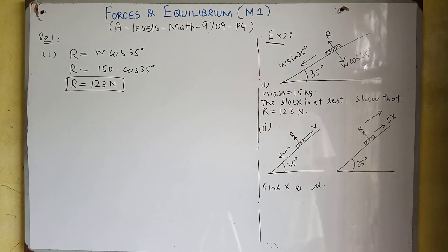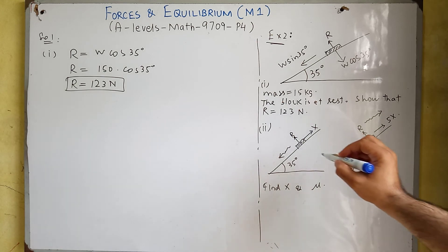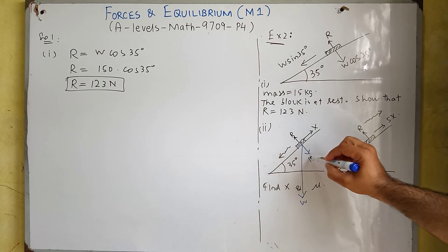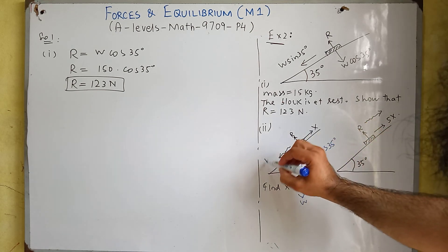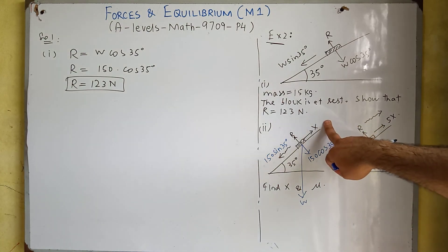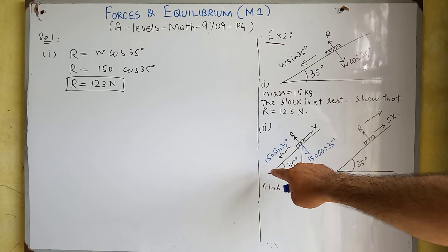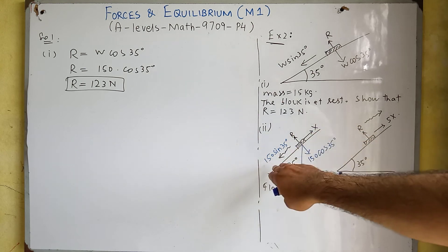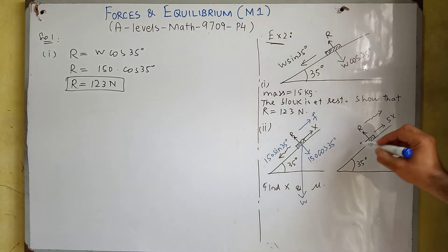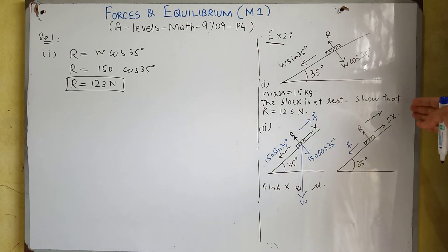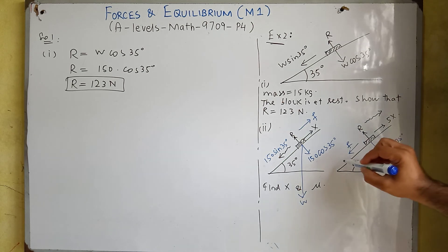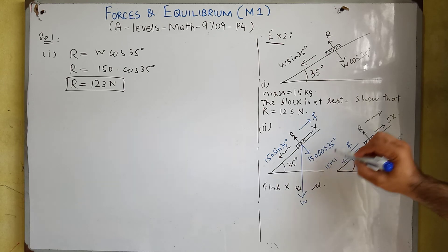We will resolve the components of forces. The weight component perpendicular to the surface is 150 cos 35 and parallel to the surface is 150 sin 35. When force X is applied the body moves downward, so the frictional force acts upward along the surface (opposite to motion). When force 5X is applied the body moves upward, so the frictional force acts downward along the surface.